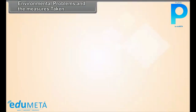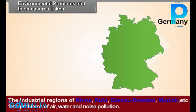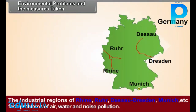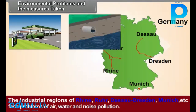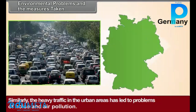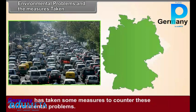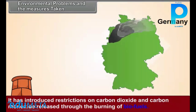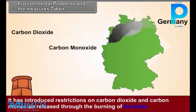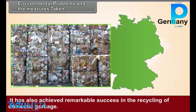Environmental Problems and Measures Taken. The industrial regions of Rhine, Ruhr, Dessau-Dresden, Munich, etc. face problems of air, water, and noise pollution. Similarly, heavy traffic in urban areas has led to problems of noise and air pollution. Germany has taken measures to counter these environmental problems. It has introduced restrictions on carbon dioxide and carbon monoxide released through the burning of biofuels. It has also achieved remarkable success in the recycling of domestic garbage.